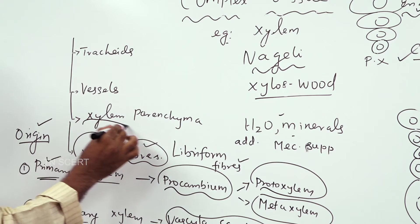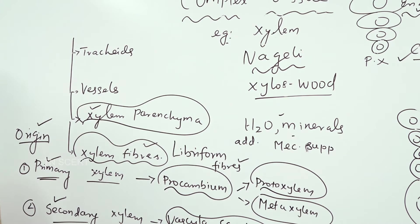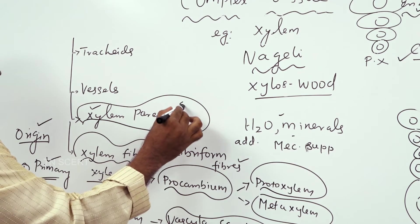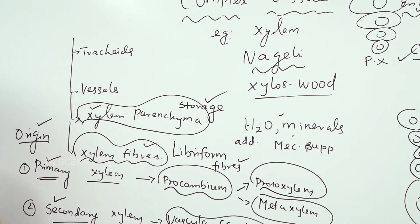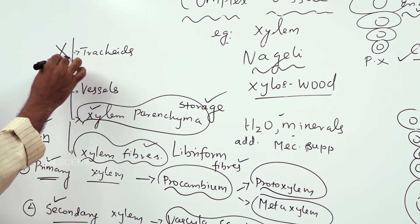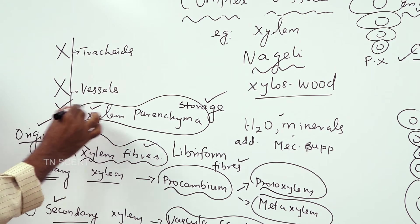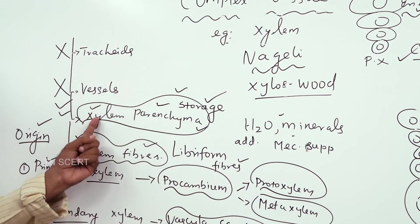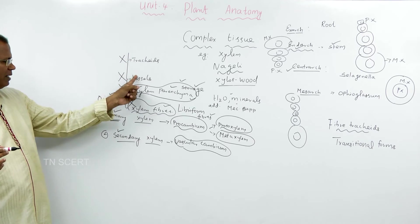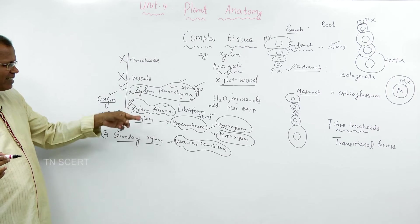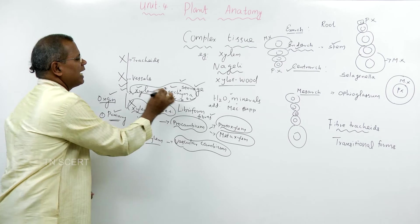The parenchymatous tissue present in the xylem is said to be xylem parenchyma. The main function is storage. Starch. Tracheids, vessels and xylem fibers are all dead cells. Xylem parenchyma is the only living tissue in xylem.